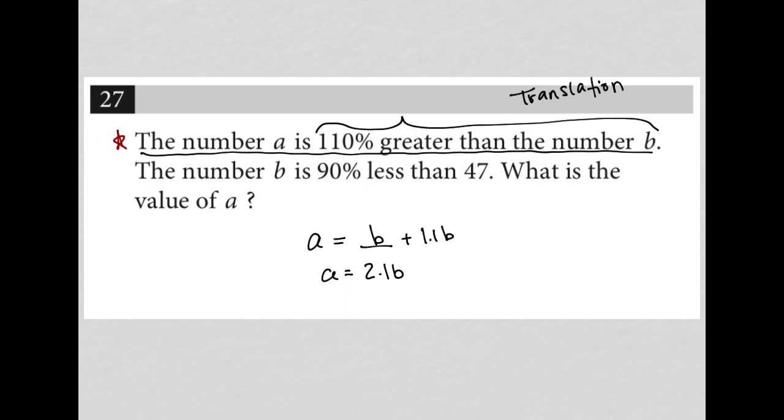And then the next sentence says the number B is, so equals, 90% less than 47. So I could say that's 47 minus 0.9 times 47. Again, the 47 and then 90% less than that 47. Another way I could write that is that's going to be 10% of 47, so 0.1 times 47.